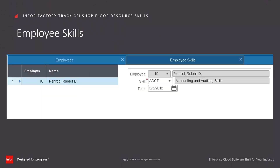The CSI employee skills form is used to associate the employee with a CSI skill. For more information on CSI skills, please see the CSI documentation on skills. In the employee skills form, the skill that the employee has obtained is selected in the skill field. This field matches the skill used in the Factory Track resource group skills management form. The date that the skill was obtained or effective is specified in the date field.